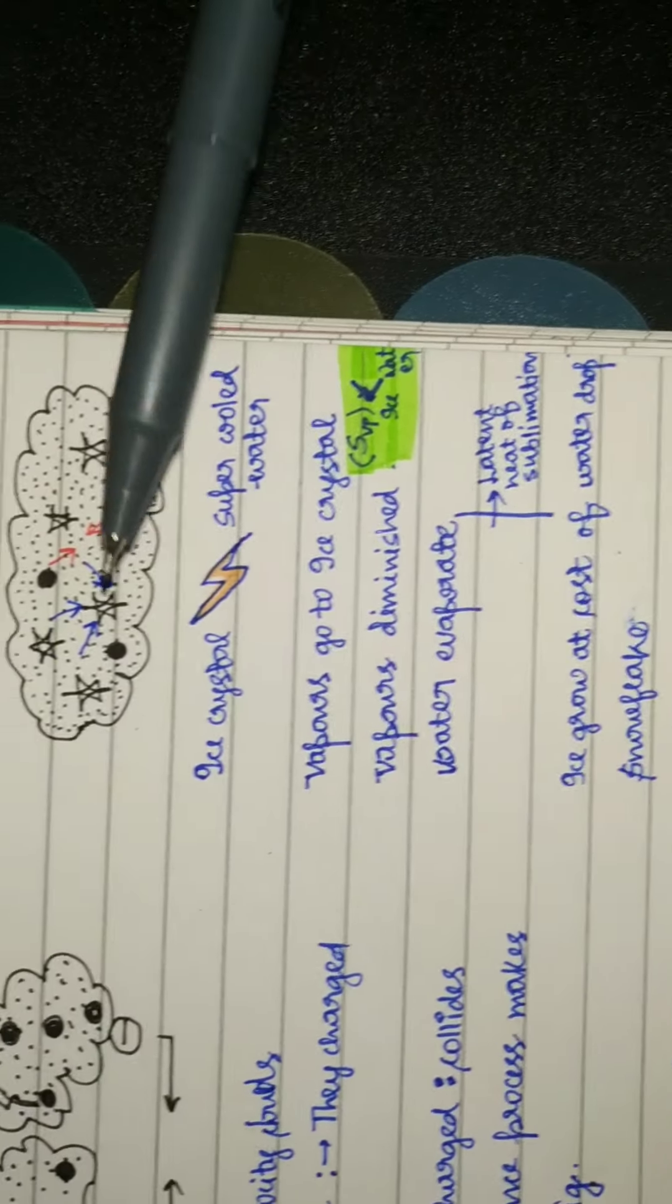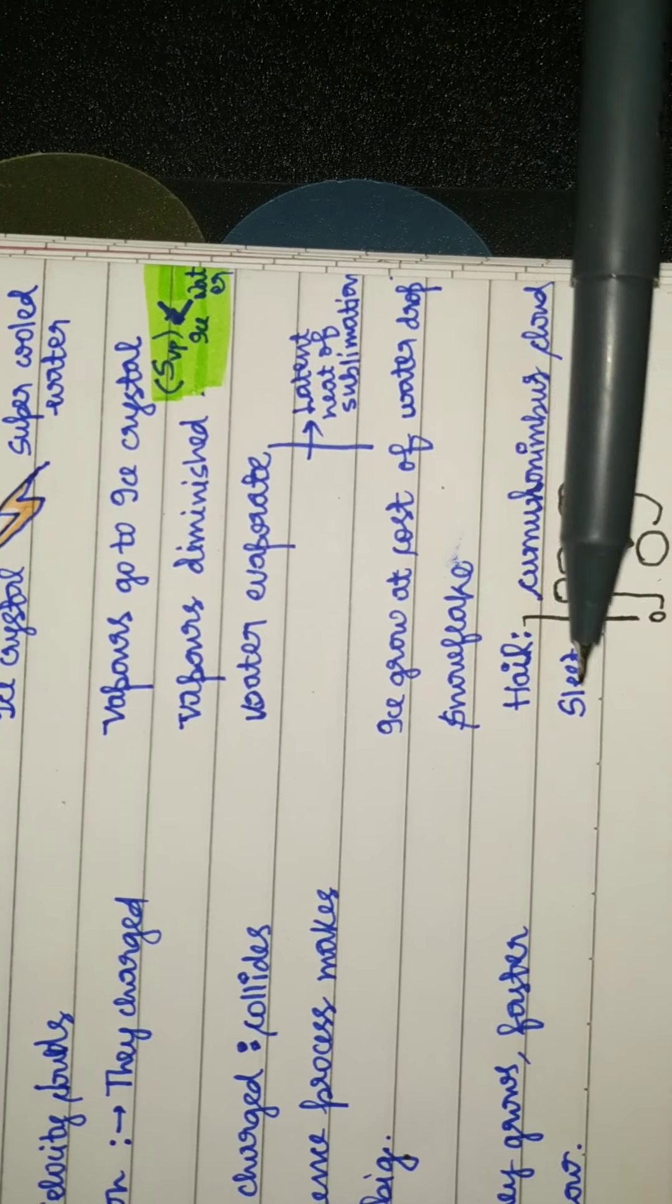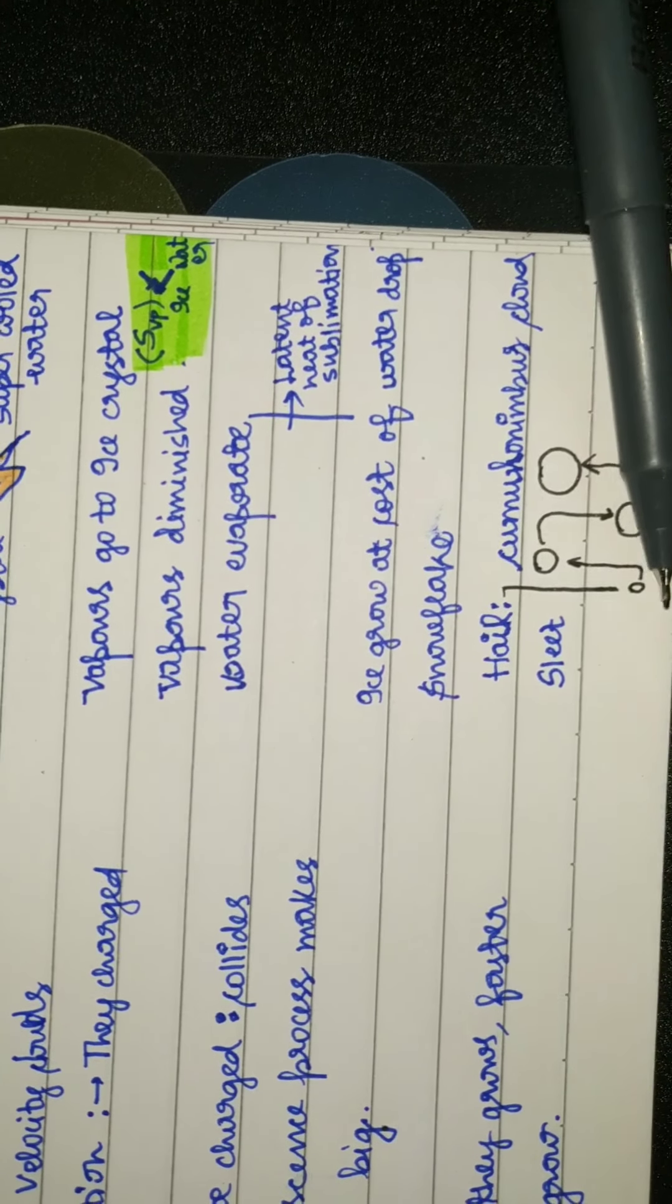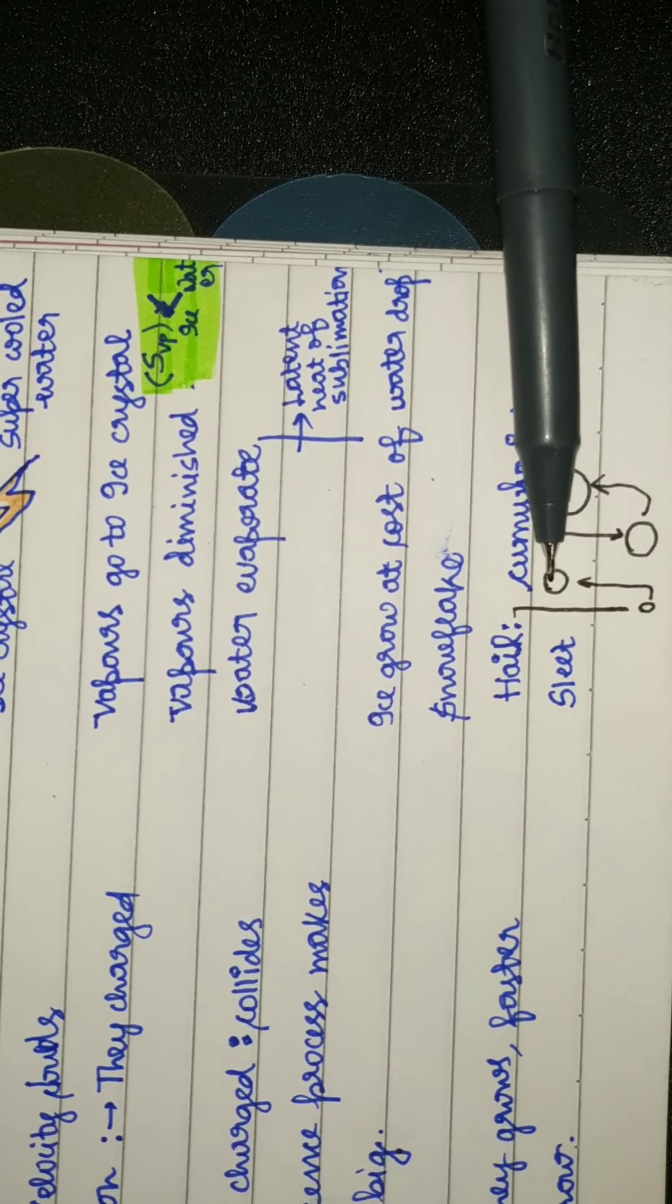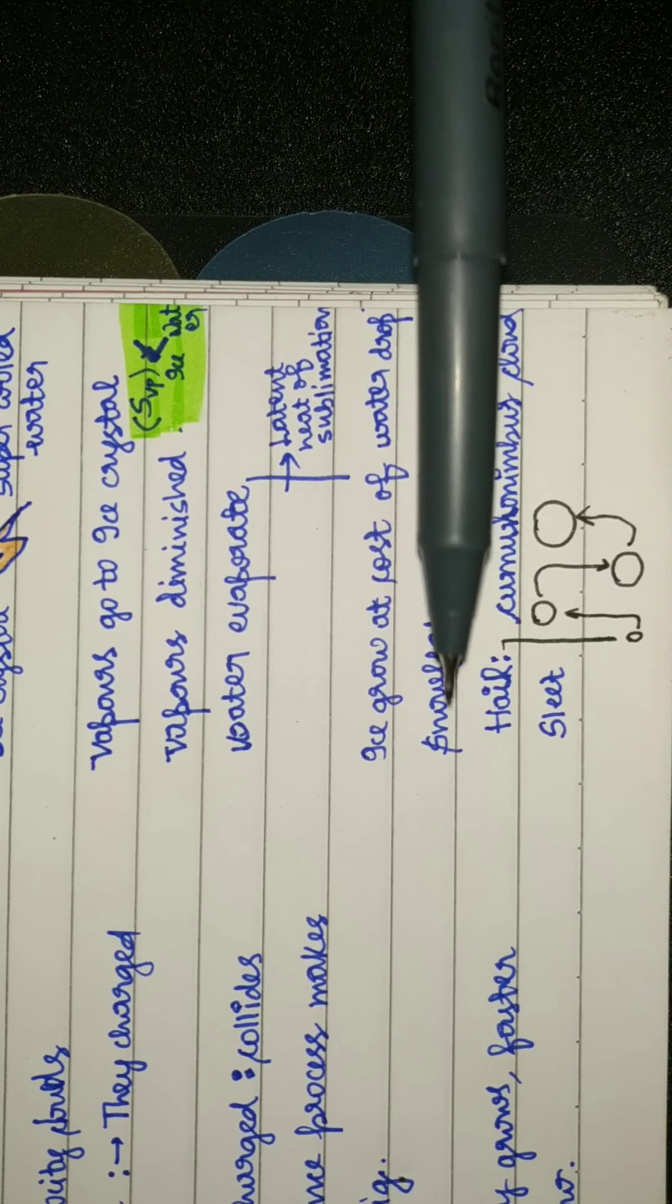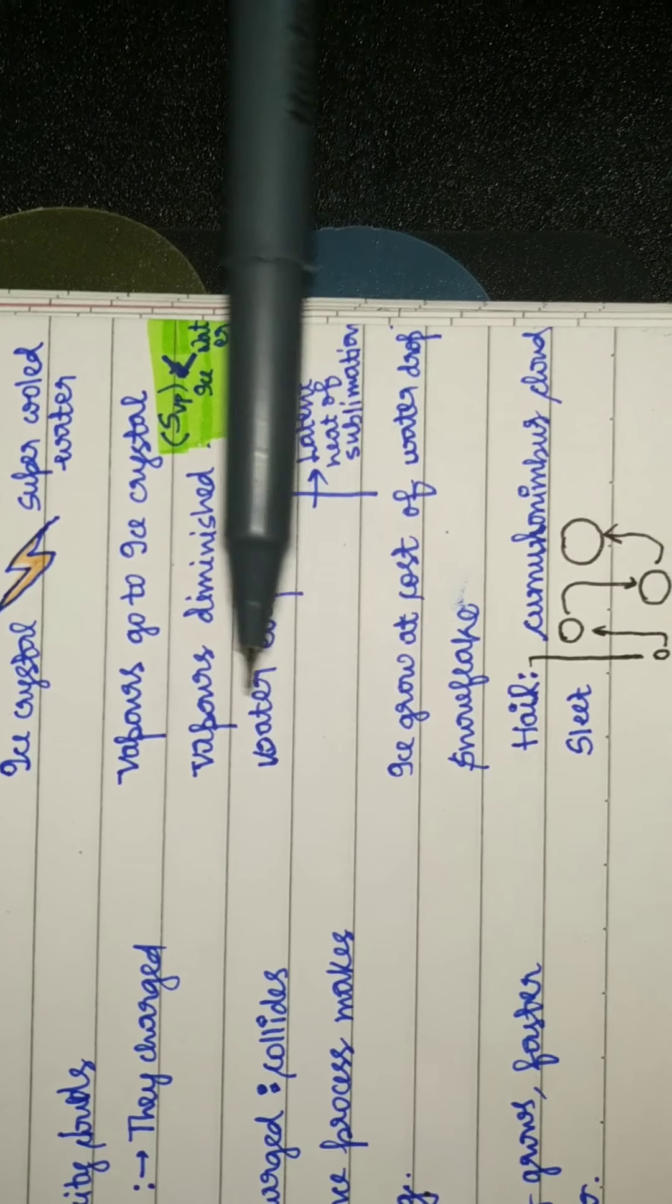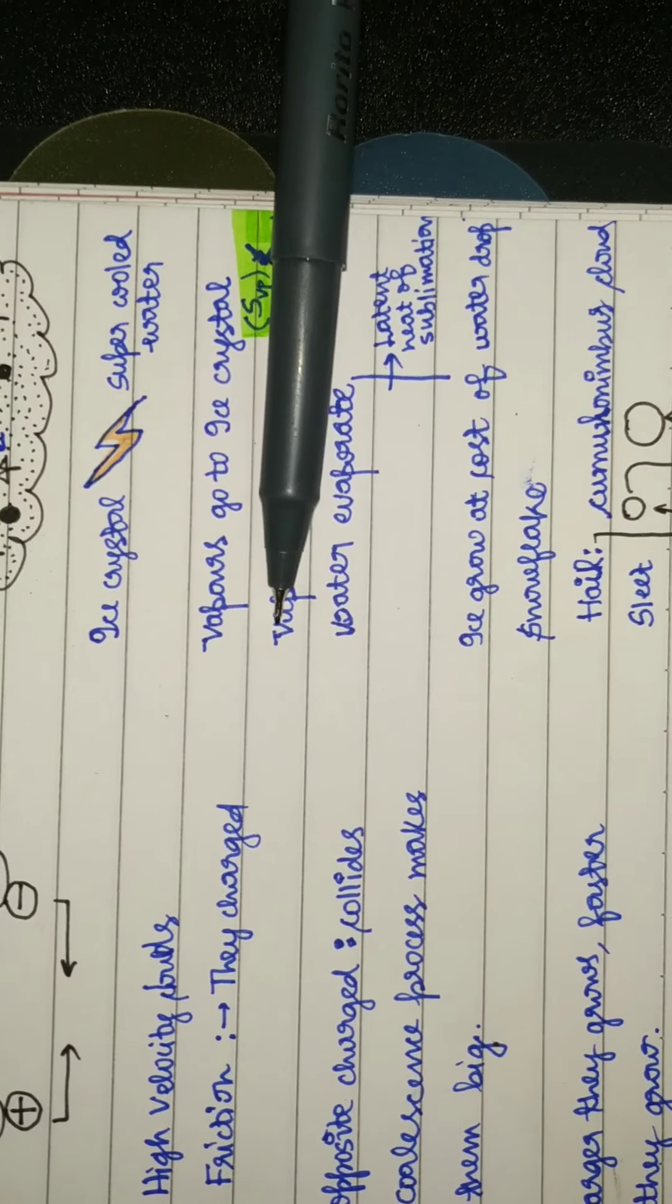So as I have already explained, snowflakes are formed. These snowflakes fall, but because of turbulence, they again rise. During rise, they again gain size and fall, they again gain size. So snowflake converts to hail and sleet.